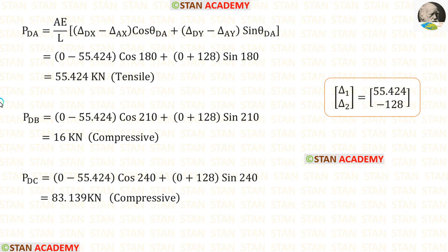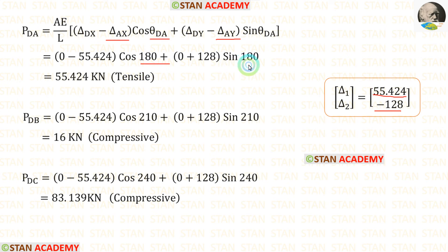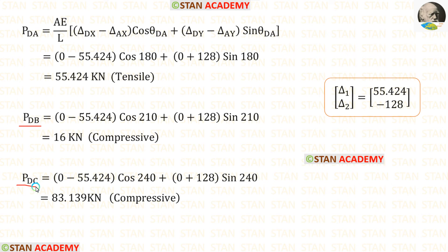Now let us calculate the member forces. Since AE/L equals 1 for all members, there is no need to include it separately in the formula. Delta Dx and delta Dy will be zero because there is no displacement there. For delta Ax we apply 55.424 and for delta Ay we apply minus 128. Theta DA equals 180 degrees. After calculations, PDA is positive — so it is tensile. For PDB and PDC we get negative values, so they are compressive.